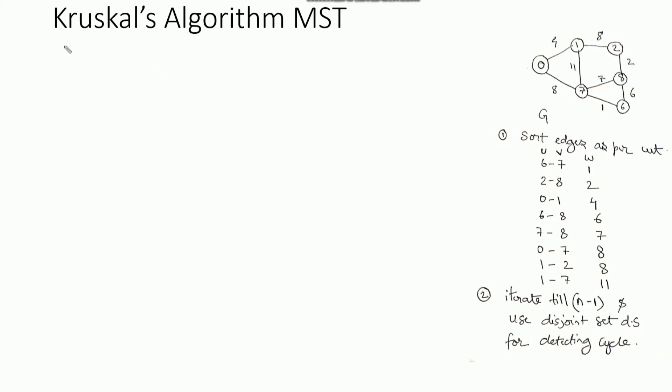Hello friends. In this video I will be explaining Kruskal's algorithm. This algorithm is used to find the minimum cost spanning tree of a graph. In my previous videos I have already explained Prim's algorithm, which also finds the minimum cost spanning tree using a priority queue to extract the minimum vertex. Kruskal's is a different approach to find the minimum cost spanning tree.